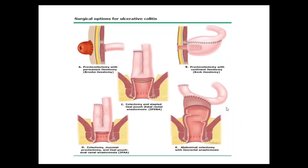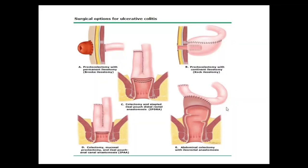Total proctocolectomy with permanent ileostomy is considered for patients with significant comorbidities, rectal malignancies requiring APR, impaired sphincter function, and high-risk patients. Age is not an absolute criterion for doing a pouch, but it is generally avoided in the elderly. For patients with underlying malignancy in the lower rectum, total proctocolectomy with permanent ileostomy is the choice.